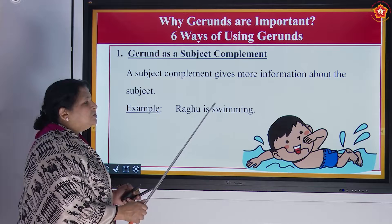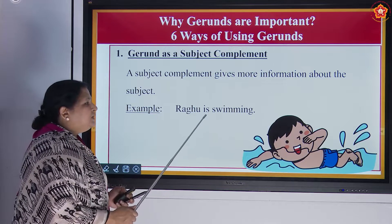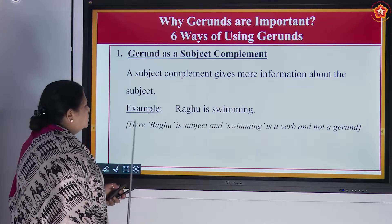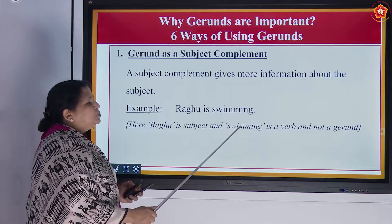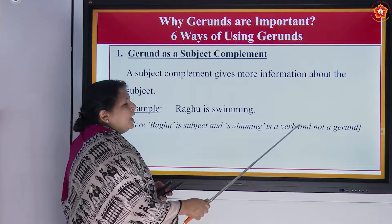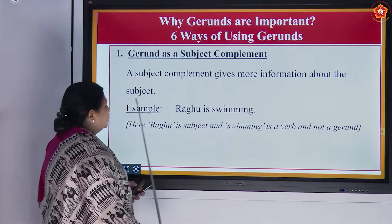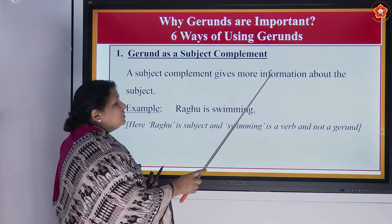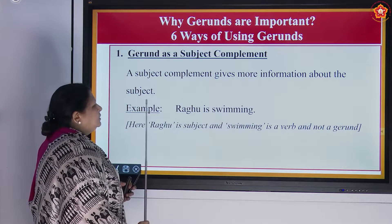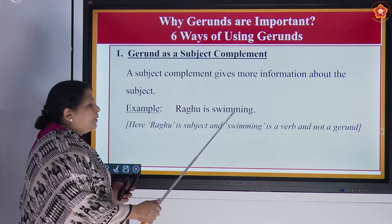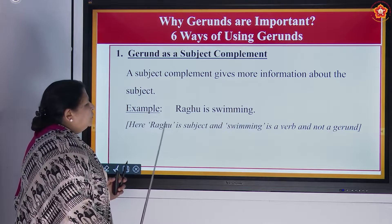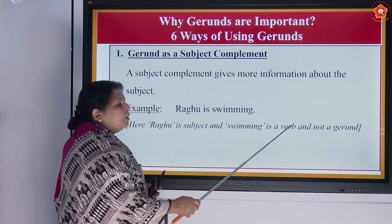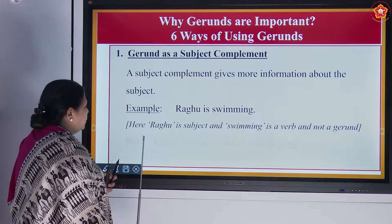Example: Raghu is swimming. What is Raghu doing? It is telling more about him. Here, Raghu is the subject and swimming is a verb — and not a gerund. We have to be careful about this.